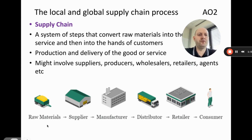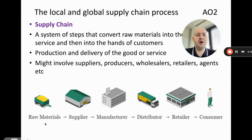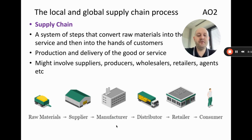Let me walk you through this supply chain quickly. We start off with the raw materials — this might be metal, glass, or whatever's used — and then the supplier delivers those raw materials to the manufacturer. The manufacturer produces the product, then uses a distributor who delivers those products to the retailer — the shop — and then the customer goes to the shop to buy the product.